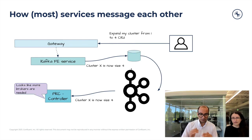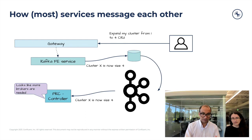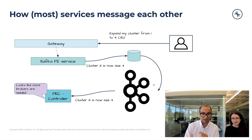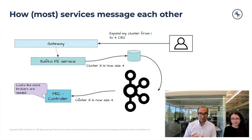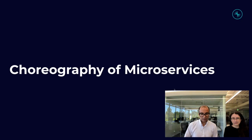Now let's see how communication between services works. A request to increase to four CKUs hits the gateway, goes to Kafka front-end service, which does quota checks, validations, and writes to a database. This write triggers a Debezium connector poll, which reads the database change and writes it to a Kafka topic. This creates an event for PKC controller, which determines the action needed. This pattern is followed everywhere, though some places like Kafka front-end still use GRPC for quota service or validation calls.